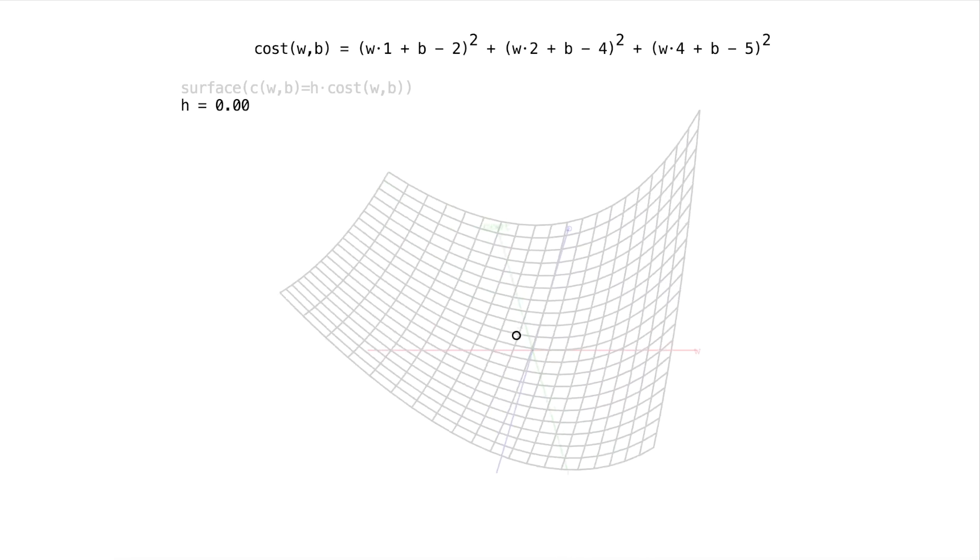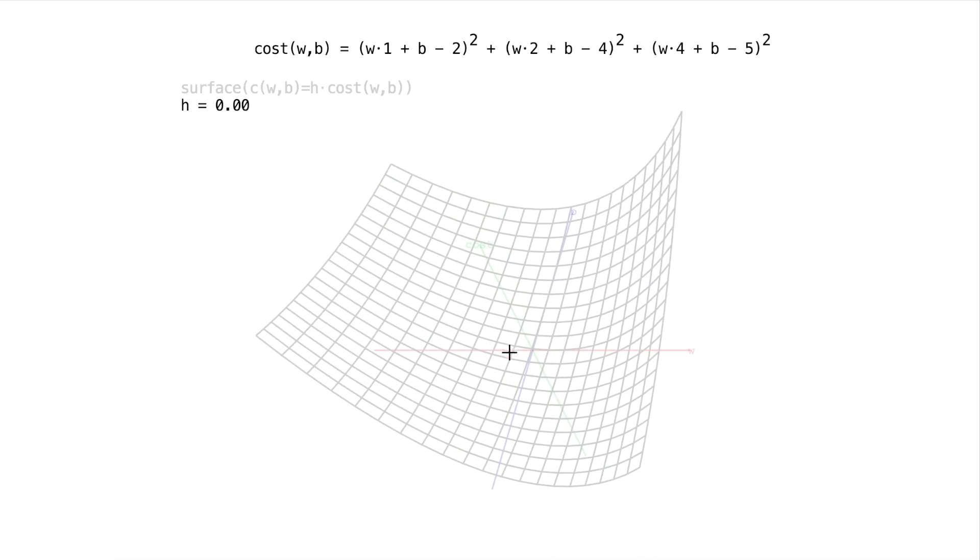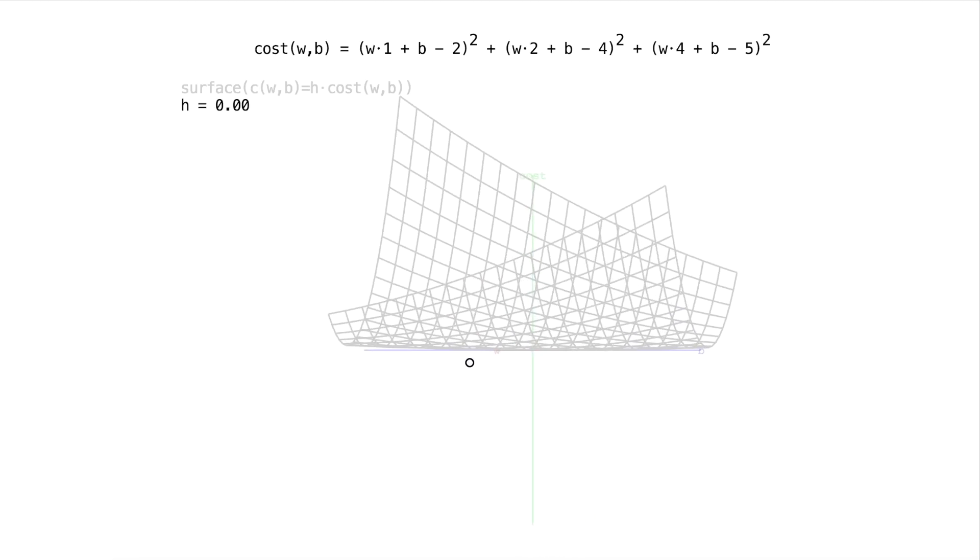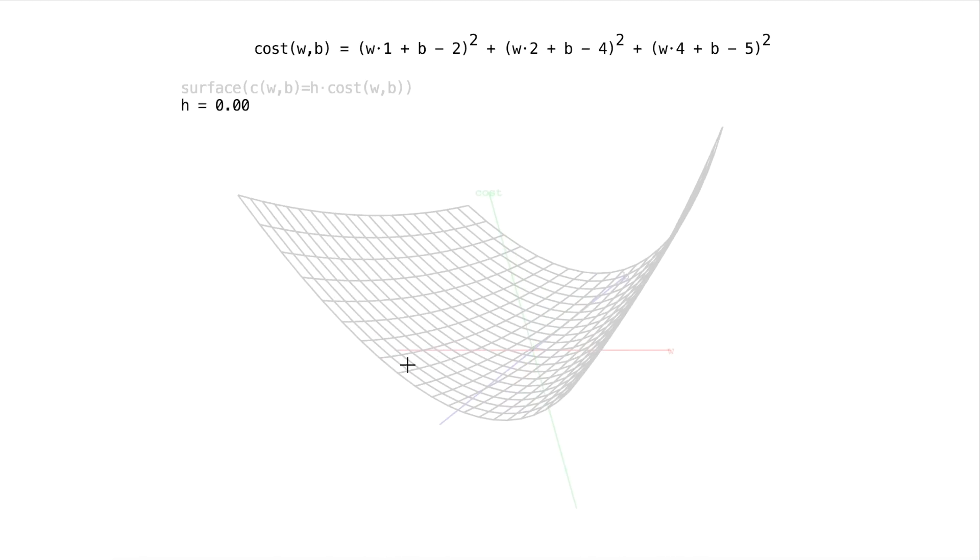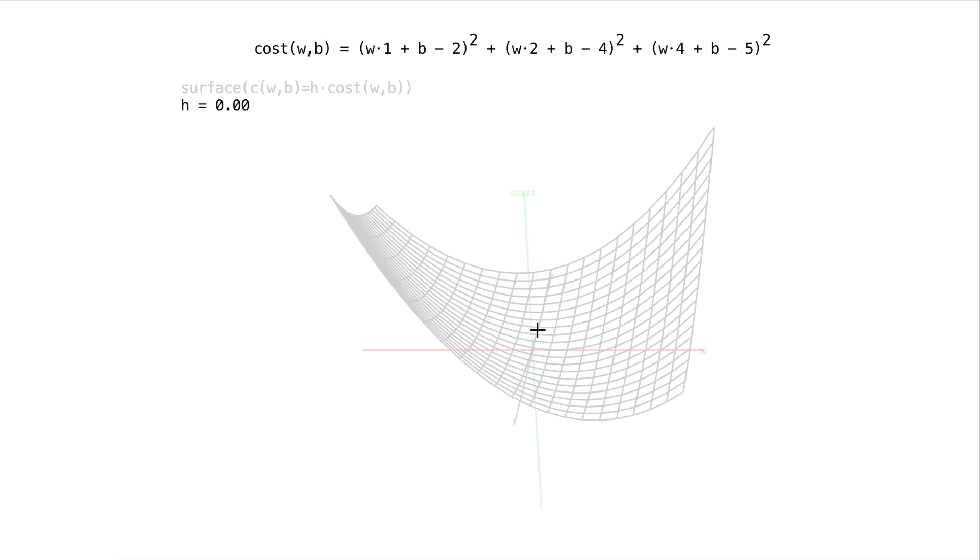So it looks like w and b values that are close to 0, 0 around here on the surface are also low in cost. And it looks like the cost shoots up for negative values of w and negative values of b. And it also does so for positive values of w and b.